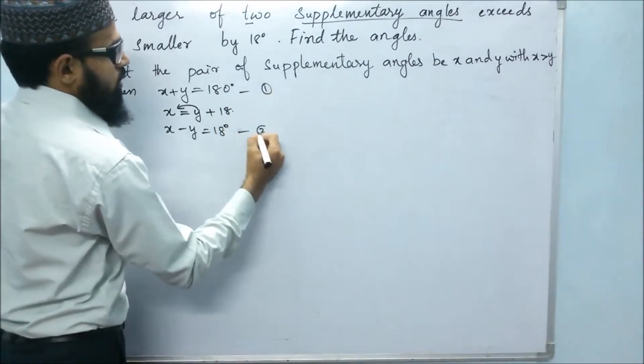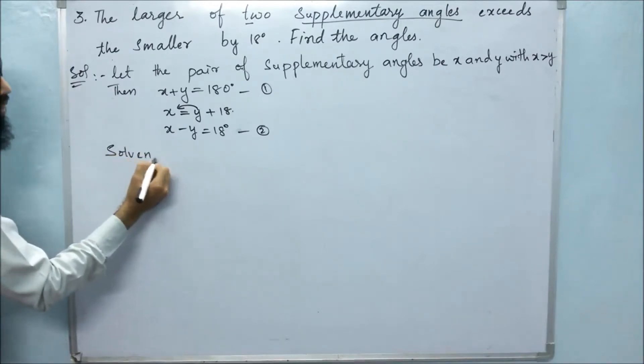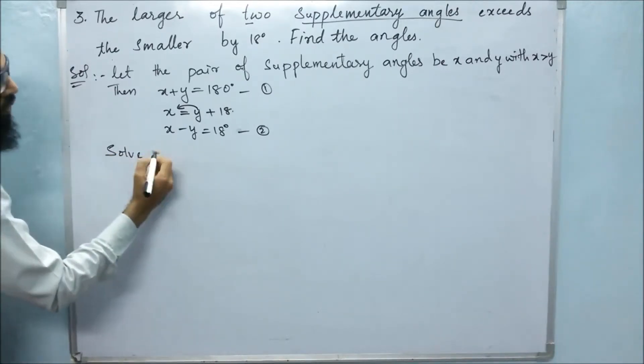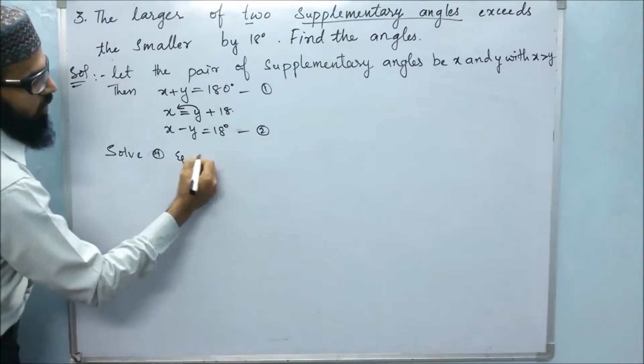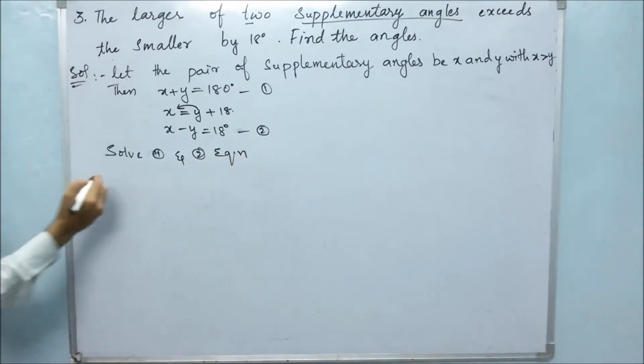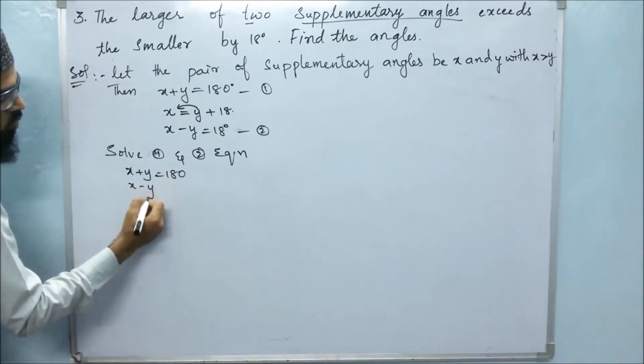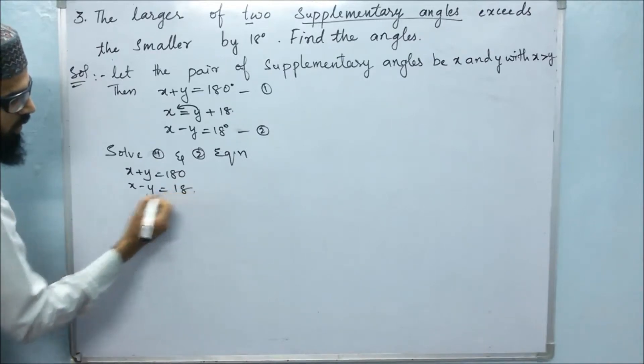This is our first equation and second equation. Now we will solve the first and second equation. So x plus y equals 180 degrees, and x minus y equals 18 degrees.